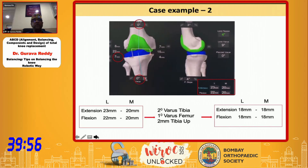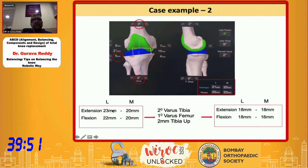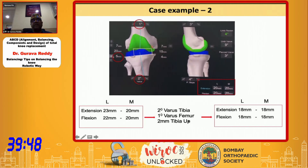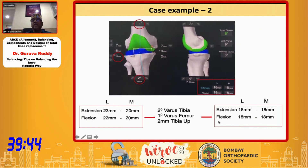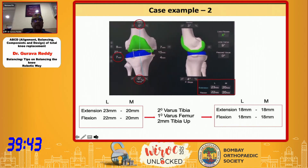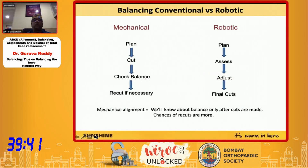In case two, the video shows it takes exactly 15 seconds. Starting from gaps of 23, 20, 22, and 20 mm, by doing these three steps in one single stroke, all gaps are brought into a single box of 18 mm. This shows you don't need to worry about the time. In mechanical surgery you plan, cut, check balance, and re-cut. In robotics, you plan, assess, adjust, and then make the final cut — the advantage is balancing before cutting.